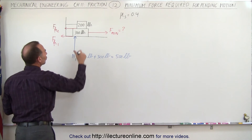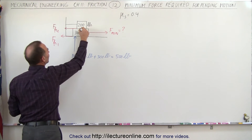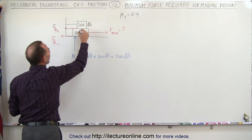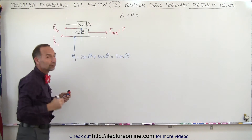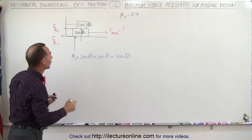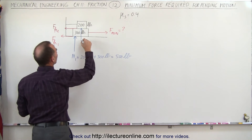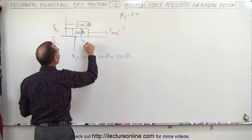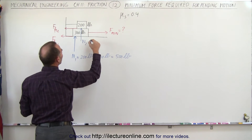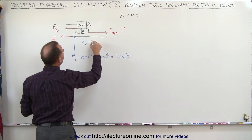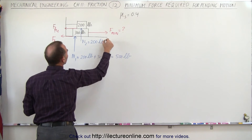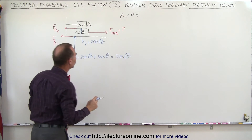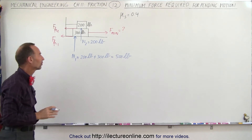The normal force between these two blocks is simply going to be caused by the weight of the block on top. So normal force 2 is simply equal to the reactionary force to the weight of the block on top — therefore 200 pounds.